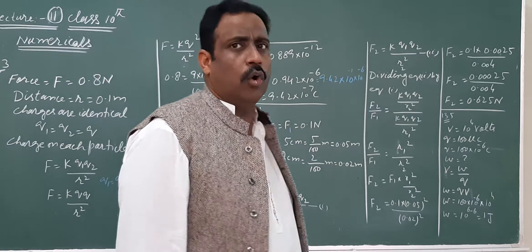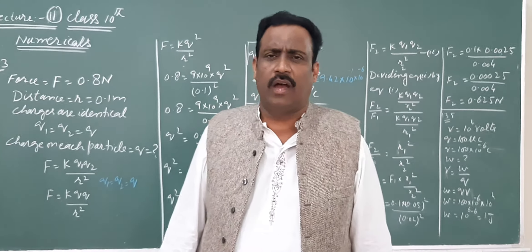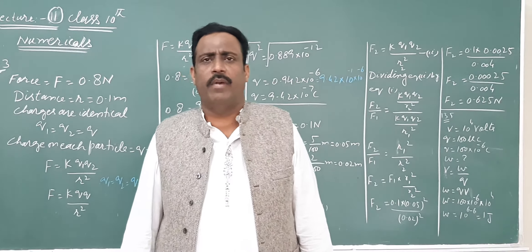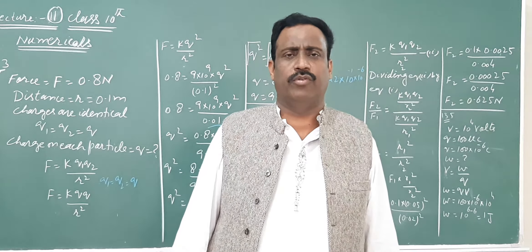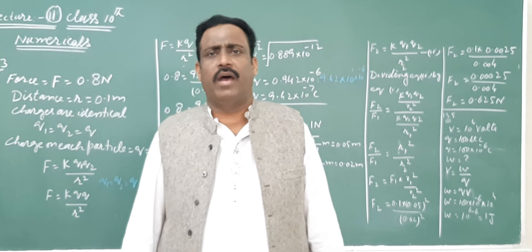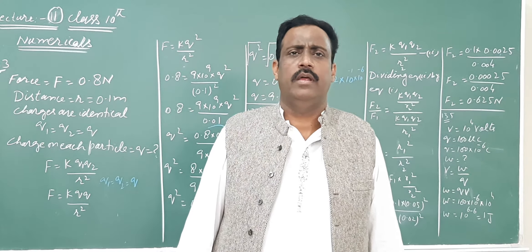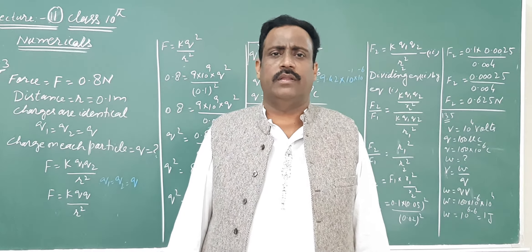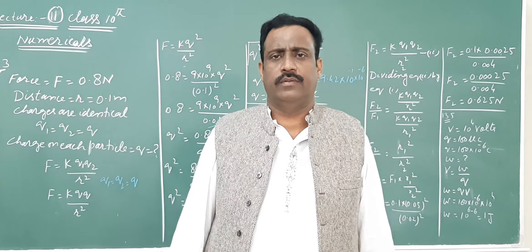W equals V multiplied by Q. V is 10 to power 4 volt, Q is 100 microcoulomb which equals 10 to power minus 4 coulomb. So W equals 10 to power 4 multiplied by 10 to power minus 4, which equals 1 joule.